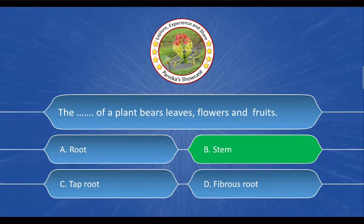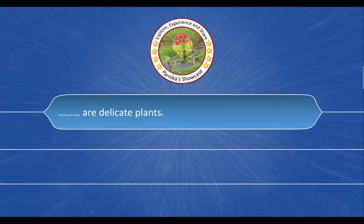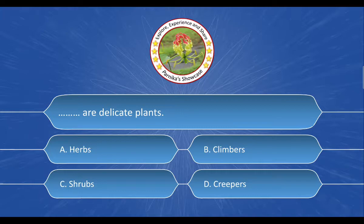Next question: Dash are delicate plants. The options are A. Herbs, B. Climbers, C. Shrubs, D. Creepers. And the correct answer is A. Herbs.